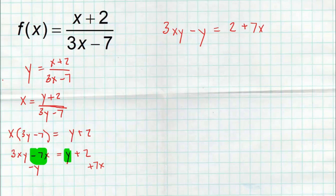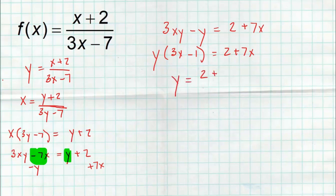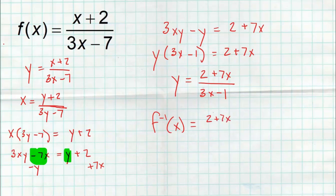I move the −7x to the right by adding it, and move the y to the left by subtracting it, leaving 3xy − y = 2 + 7x. Now how do I take two y's and make them one? We need the f-word — and the f-word for a lot of students in math is a bad word — but it's factor. We factor out that y to get y(3x − 1) = 2 + 7x. Then we divide both sides by (3x − 1): y = (2 + 7x) / (3x − 1). Don't forget the final step — identify this as the inverse function: f⁻¹(x) = (2 + 7x) / (3x − 1).